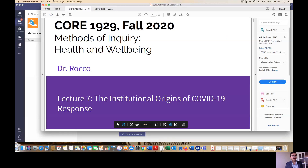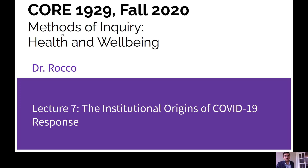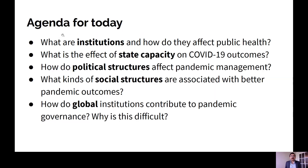For the next few weeks we're going to turn to talking about COVID's origins. By that I mean we're going to talk about the roots of how infectious diseases emerge and how they spread, and we're also going to talk about the roots of society's response to these diseases. Today we're going to take a specifically political science lens on thinking about the origins of the response to COVID-19, and we're going to talk specifically about political institutions.